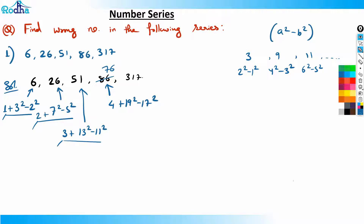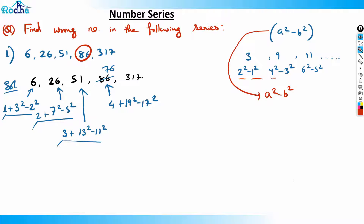So you need to remember this: series of the form a² - b² can use consecutive integers or prime numbers. Observe this pattern carefully. Moving forward, the next term uses primes 29 and 23, which also satisfies the pattern. This is a good question. Let's go to the next one.